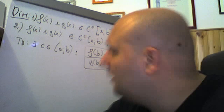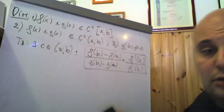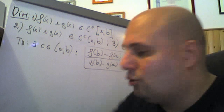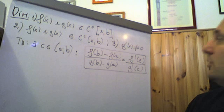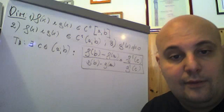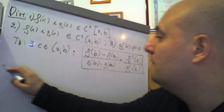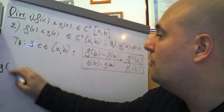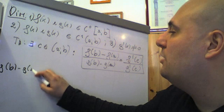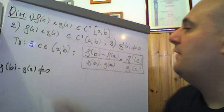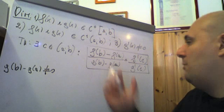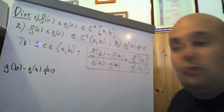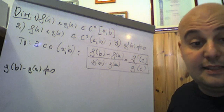A questo punto andiamo a dimostrare come questa differenza che sta al denominatore, g(b) − g(a), sia diversa da 0. È importante perché dobbiamo dimostrarlo: g(b) − g(a) è diverso da 0.